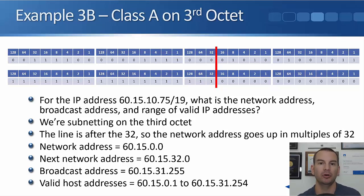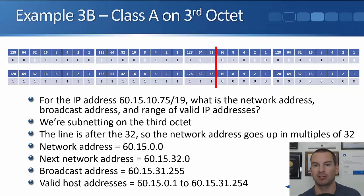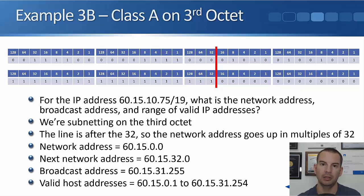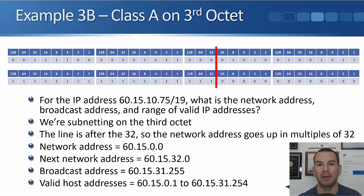The value on the fourth octet — the lower range is going to be a one, the higher range is going to be 254 for the hosts. The subnetting is done on the third octet if the subnet mask is anything between a /16 and a /24.